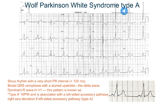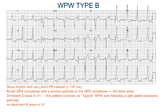In type A WPW, there will be a dominant R wave in V1, and there will be right axis deviation — the QRS complex in lead 1 is negative whereas it is positive in lead 2 and AVF. In type B WPW, the PR interval will be short and you will see the delta wave, but in V1 you will see a dominant S wave instead of an R wave.